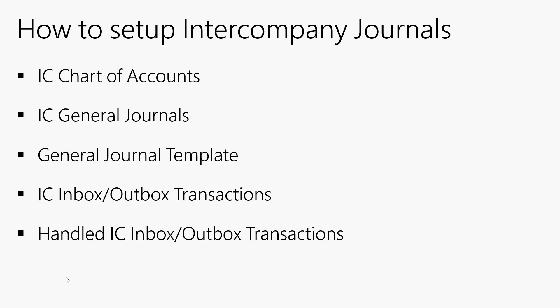For example, the intercompany chart of accounts, the intercompany general journals, and the general journal templates. Once this is set up, the transactions go to the inbox — intercompany inbox and outbox transactions — and the handled IC inbox and outbox transactions.